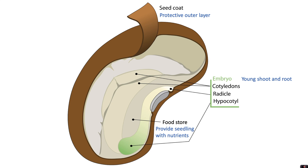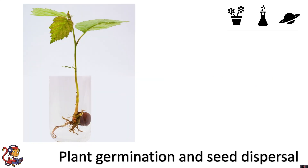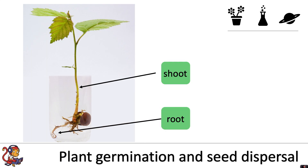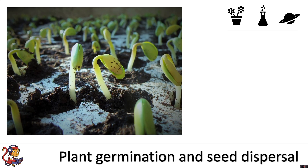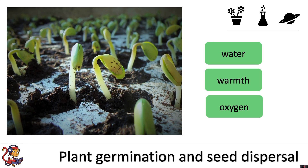Wherever the seed lands, if the conditions are favourable, it will germinate. Germination is the process by which the seed grows into a plant. The shoot will grow upwards and turn towards the light. The root will grow downwards and turn towards water. The conditions needed for germination are water, warmth, and oxygen. If any one of these are missing, the seed will not be able to germinate and start growing into a plant.